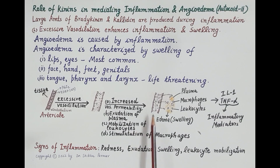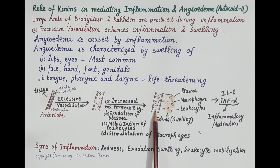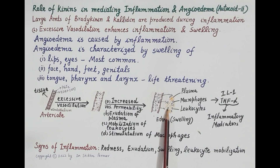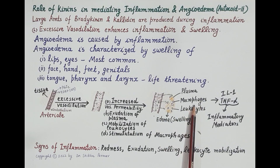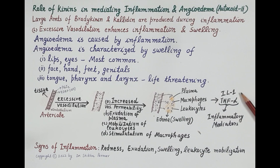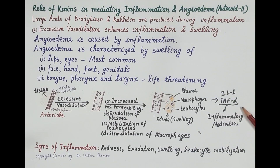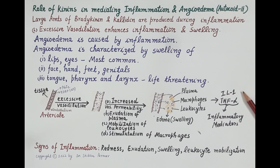Apart from this, leukocytes or WBCs from within the blood vessels also migrate and accumulate in the tissues — this is termed mobilization of leukocytes. Kinins further stimulate macrophages (which develop from monocytes) to produce inflammatory mediators like interleukin-1, tumor necrotic factor alpha, and histamine. All these inflammatory mediators further enhance and extend the process of inflammation.